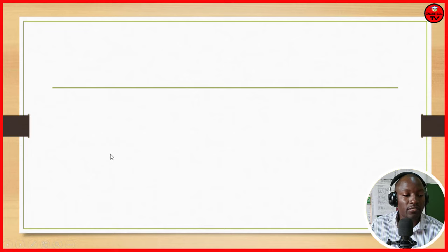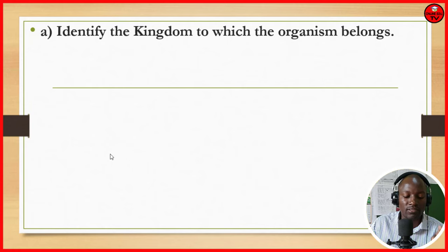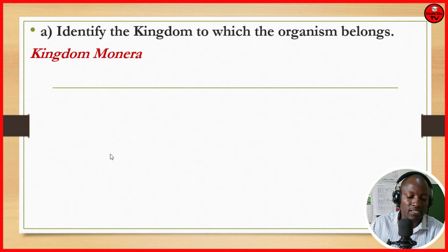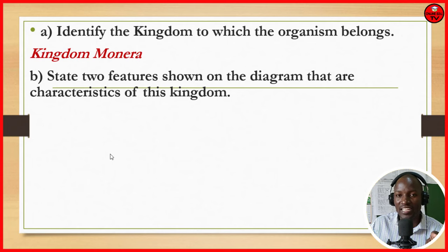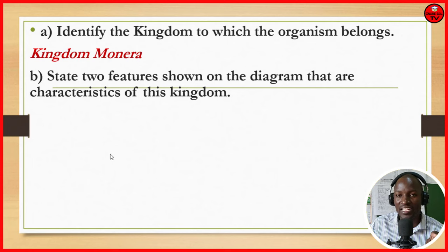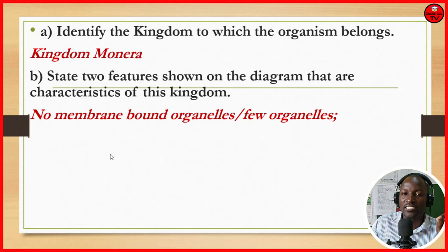Below is a diagram of a bacterium. Identify the kingdom to which the organism belongs — it belongs to Kingdom Monera. State two features shown on the diagram that are characteristics of this kingdom. We must be specific to give features shown on the diagram. Number 1, we can see there are no membrane-bound organelles and very few organelles. We can also see no definite nucleus — they are prokaryotic.